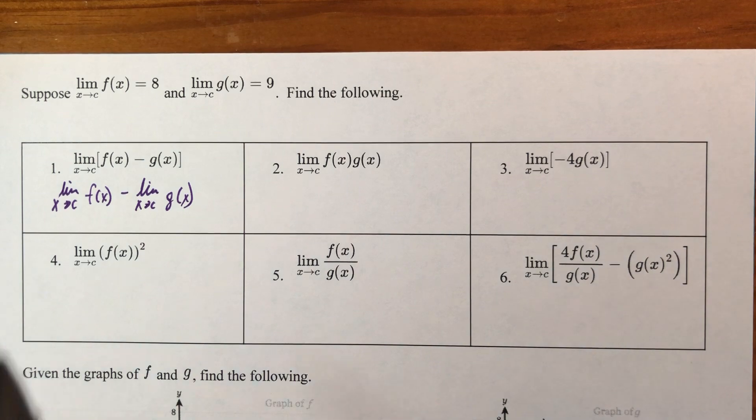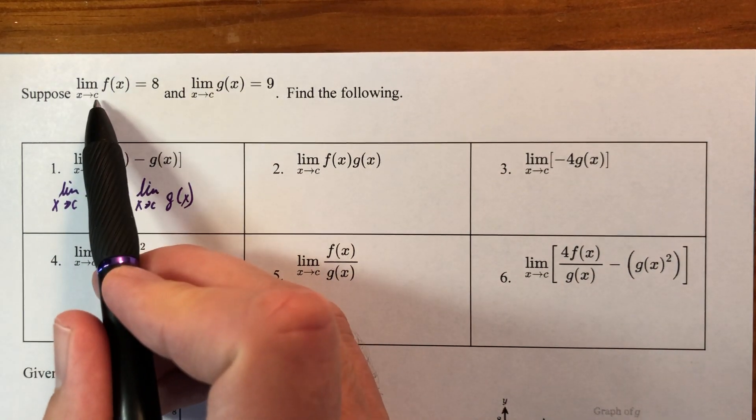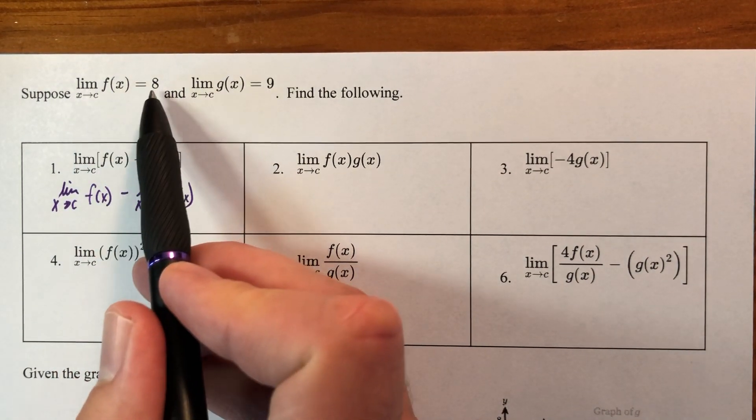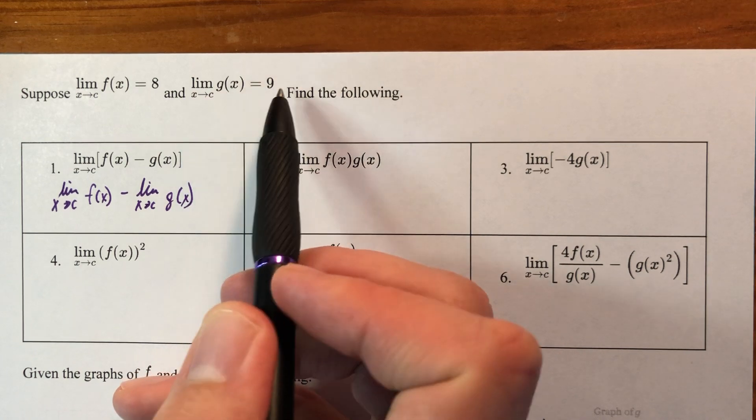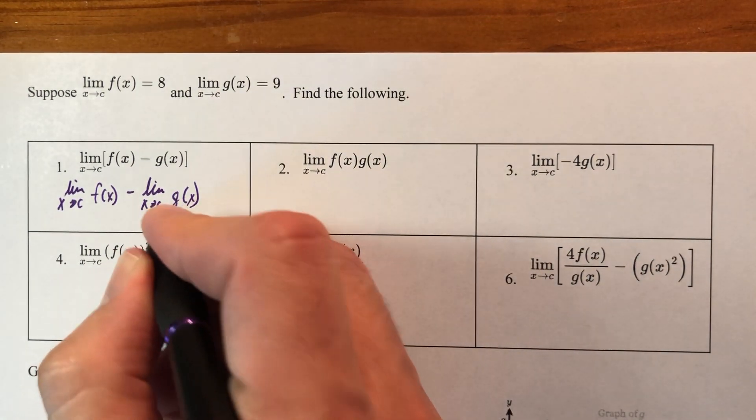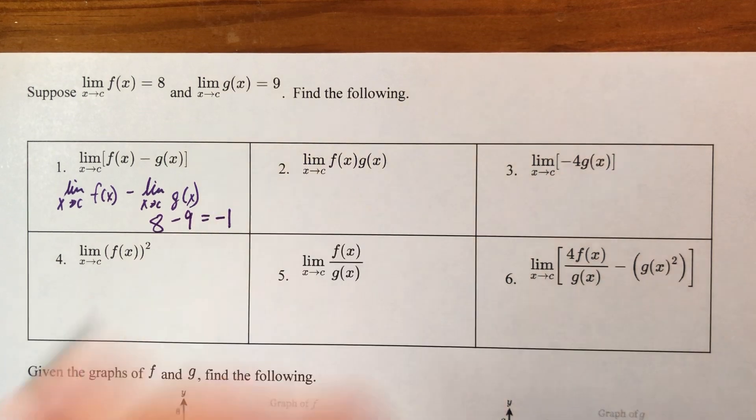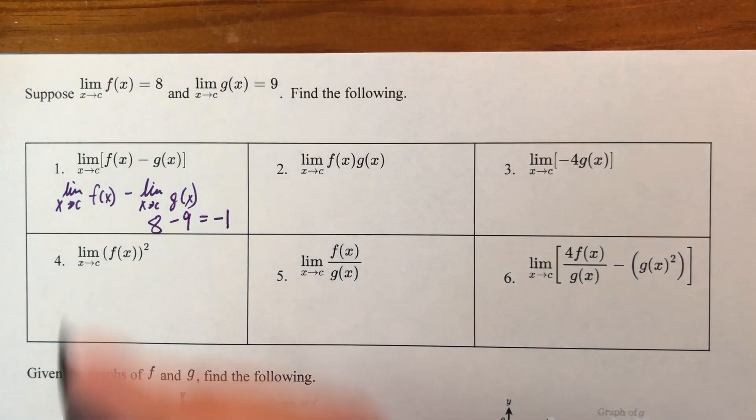But in the directions, they told us that the limit as x approaches whatever c is for f is 8, and the limit as x approaches c for g is 9. So, I really just have 8 minus 9, which gives me negative 1, and no one is surprised at that.